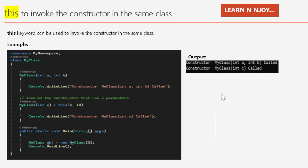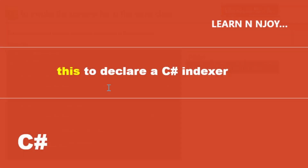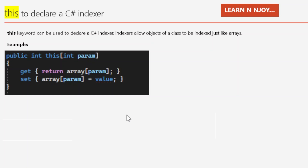Use case number four: to declare a C# indexer. The 'this' keyword can be used to declare a C# indexer. In a nutshell, an indexer allows objects of a class to be indexed just like arrays. An indexer is like a property except that its accessors take parameters. For example: 'public int this[int param] { get { return array[param]; } set { array[param] = value; } }'. I have created a detailed video on C# indexers which you can watch via the link in the description.